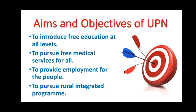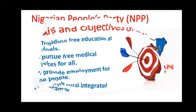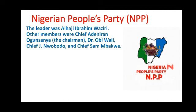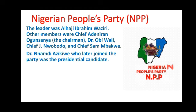Let's look at another political party — the NPP, the Nigerian People's Party. The NPP was founded by Alhaji Ibrahim Waziri, and other members of the party include Chief Adeniran Ogunsanya, who was the chairman, Dr. Obi Wali, Chief Jim Nwobodo, and Chief Sam Mbakwe. However, Dr. Nnamdi Azikiwe joined the party later on and became the presidential candidate of the NPP.